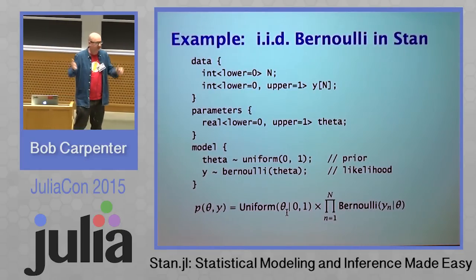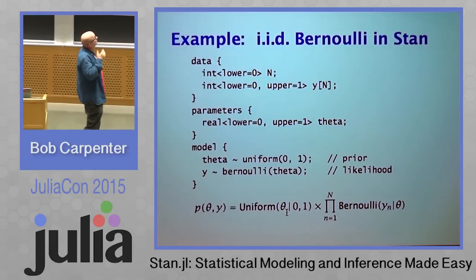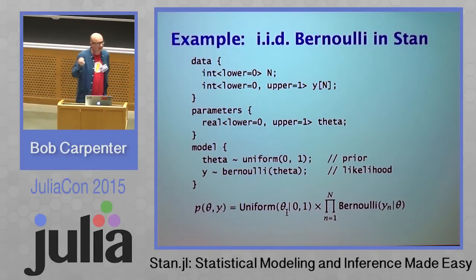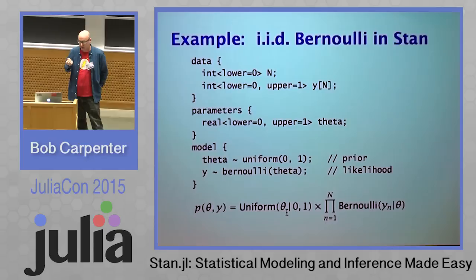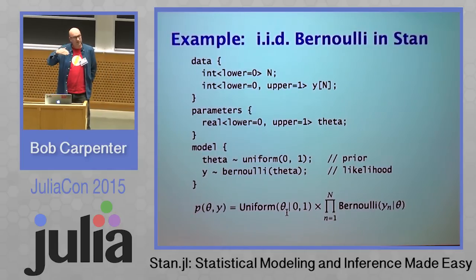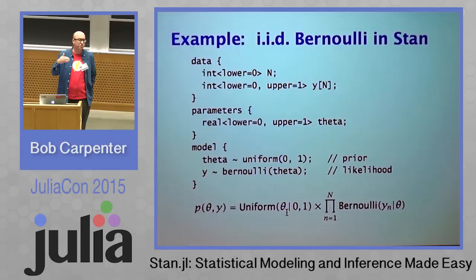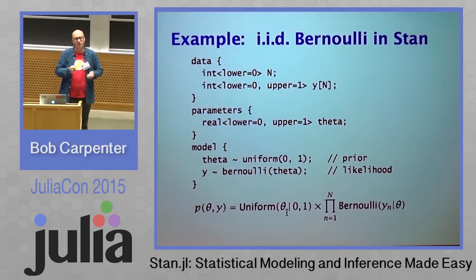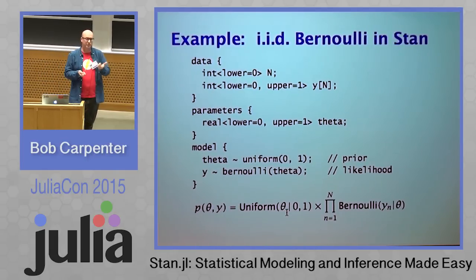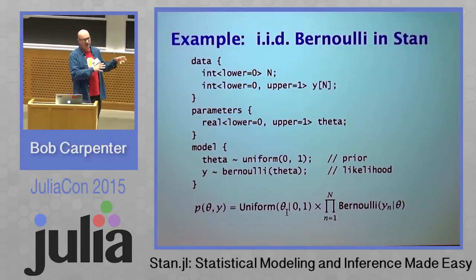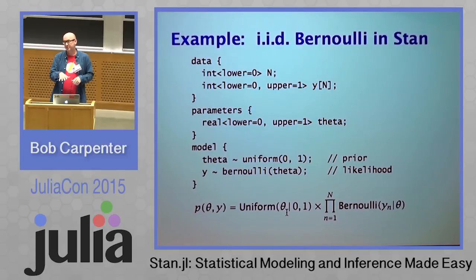I've only got 10 minutes, so here's an example of Stan. This is code written in Stan's domain-specific language for a simple model where the data is independent identically distributed Bernoulli variables. It declares a data block, a parameters block, and a model block to define the density. Variables come with constraints — here just simple lower and upper bound constraints, but you could declare a variable to be a covariance matrix. All parameters get transformed from the constrained space into an unconstrained space: we log transform positive parameters, logit transform parameters constrained to 0,1, and Cholesky factor and log transform the diagonals for covariance matrices.